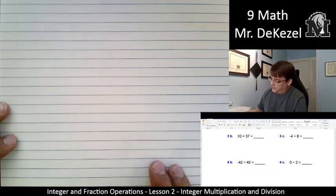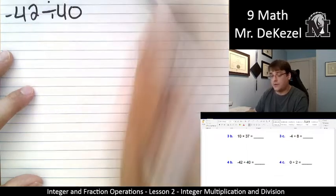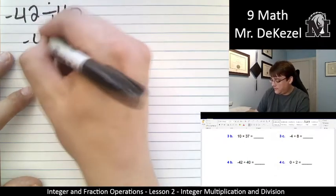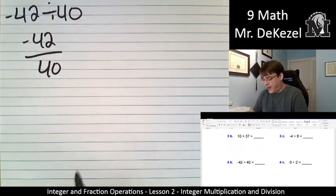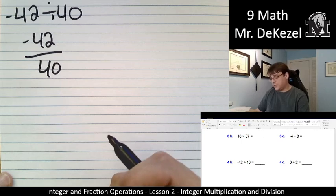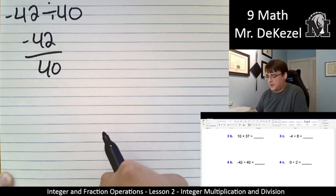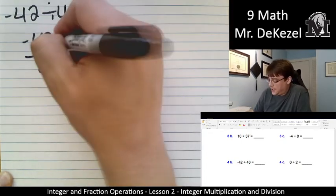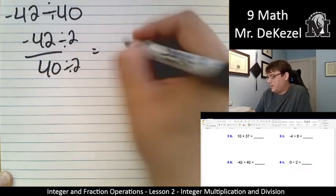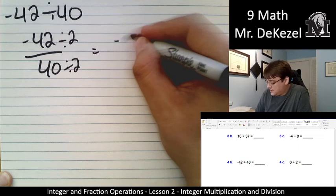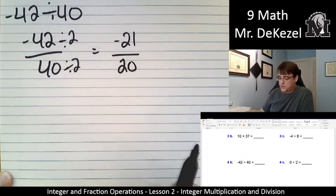42 divided by 40. Negative 42 divided by 40. Let's turn that into a fraction immediately. Negative 42 over 40. Again, one is positive, one is negative. So they're going to be a negative answer. 40 goes into 42. It's going to be once. I know it's going to be one point something. But let's reduce this a little bit and see what we can get. Divide both of them by 2 because they're even. It's my favorite thing to do. 42 divided by 2 would be 21. So this is negative 21 over 20. 40 divided by 2 is 20.